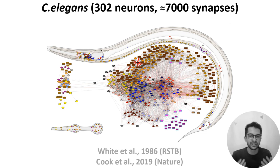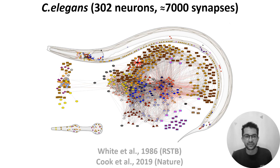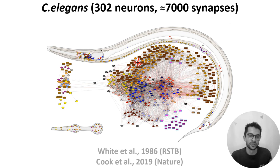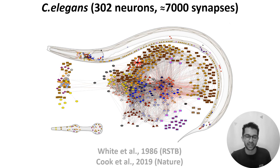Something to keep in mind is that while this network may seem simple, especially compared to a machine learning model, this network allows the worm to do everything — from responding to sensory inputs, foraging for food in its environment, and mating to produce offspring. So I wouldn't underestimate the complexity you can get from even a relatively simple biological network.